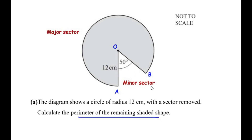The remaining large part is called the major sector and the small removed portion is called the minor sector. The points are labeled: this point is A, the center of the circle is O, and this point is B. The angle made by the minor sector at the center is 50 degrees, and the radius is 12 centimeters.